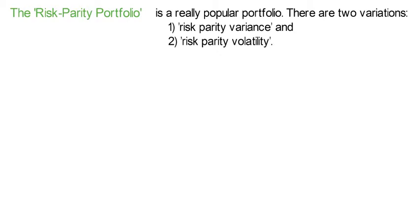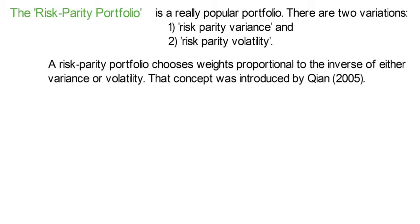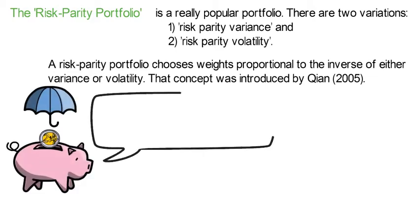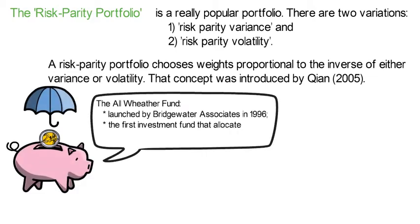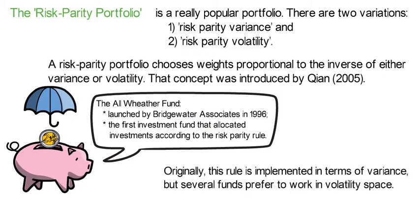Now let's move on to the really popular risk parity portfolio. There are two variations: risk parity variance and risk parity volatility. A risk parity portfolio chooses weights proportional to the inverse of either variance or volatility. That concept was introduced by Kian in 2005. Bridgewater Associates, a large hedge fund, was the first firm to launch an investment fund in 1996 allocating investments according to the risk parity rule — named the All Weather Fund. Originally this rule is implemented in terms of variance, but several funds prefer to work in volatility space.